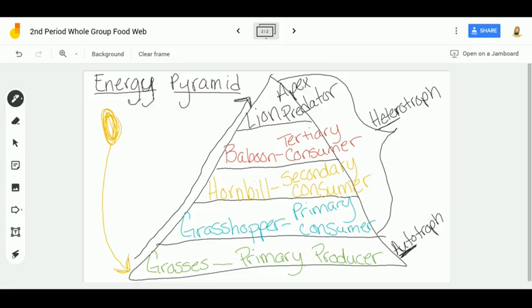In the previous video we went over how to build your energy pyramid. Now we need to talk about the flow of energy through the energy pyramid. You can see that your primary producers get their energy directly from the sun, and then your primary consumers are going to consume your producers. Then your secondary consumers are going to eat your primary consumers and get their energy from them.